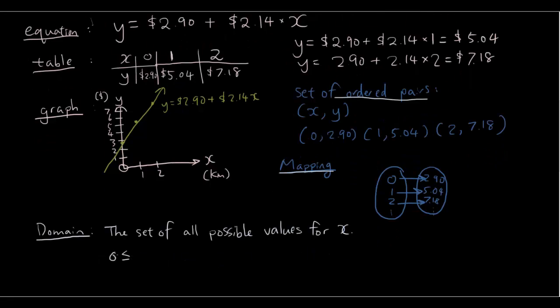0 is smaller than or equal to x, smaller than or equal to... Well, I guess you can travel for as long as you want in a taxi. Let's just say that the taxi doesn't want to leave Brisbane. So, let's just say 200 kilometers.